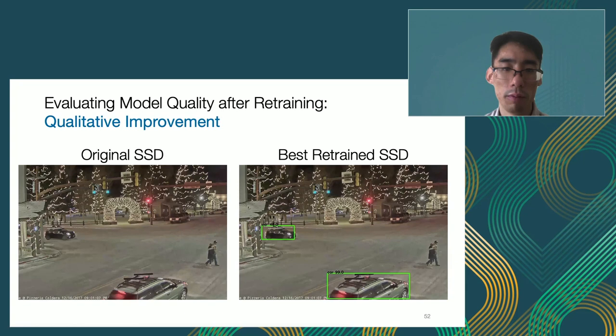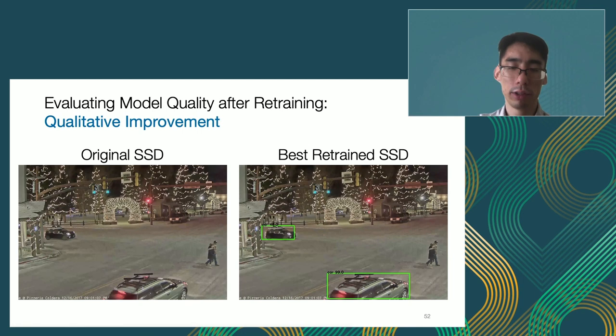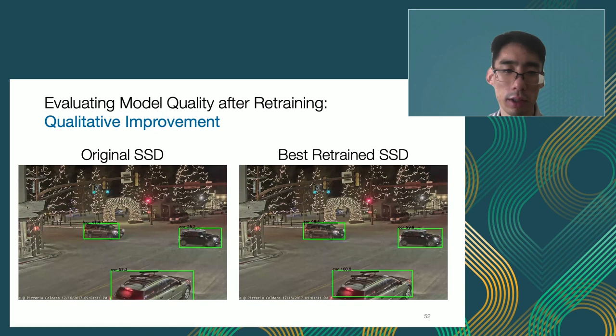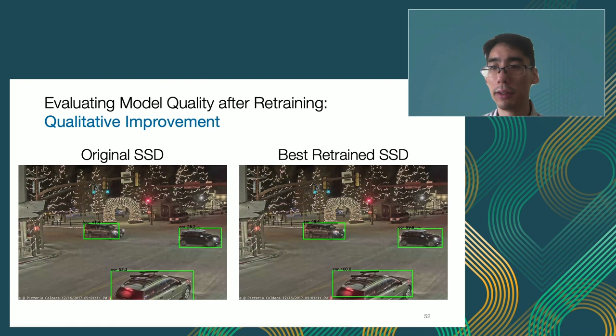I'll show some qualitative improvement results. On the left is the original model and on the right is the best retrained model, over the same video clip. The model on the right is much more confident over the results and flickers much less. The key takeaway is that it's really important to keep track of when your model may be making errors and also to vet the quality of your human labels.